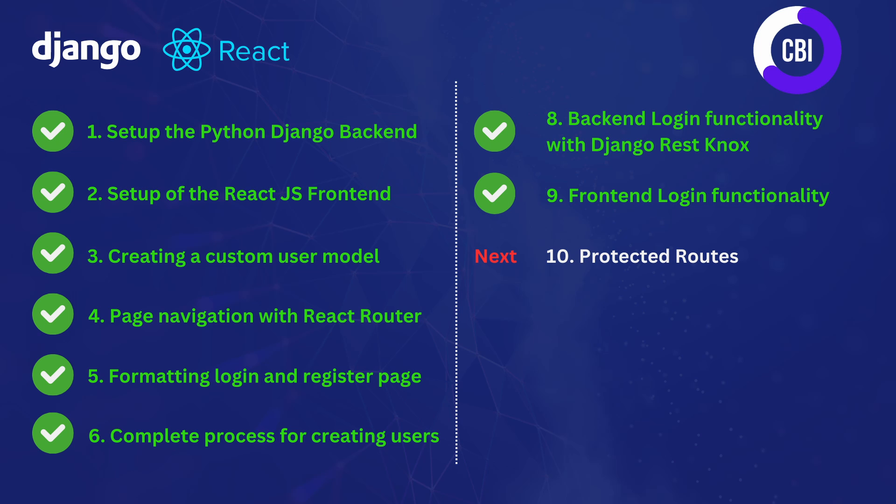That is actually all we're going to cover today. We've successfully set up the login functionality through our React.js frontend. In the next video we're going to focus on protecting our React.js frontend with protected routes that check whether a token exists, and navigate to the login page if it doesn't. After that, we'll focus on making requests to our backend using the token so we can only retrieve data once we have a valid token. Thank you very much for watching — if you enjoyed it please leave a like, and I hope to see you in the next video. Bye bye!